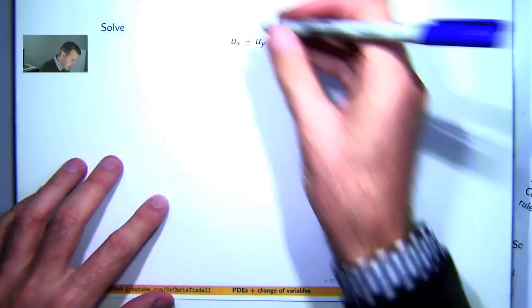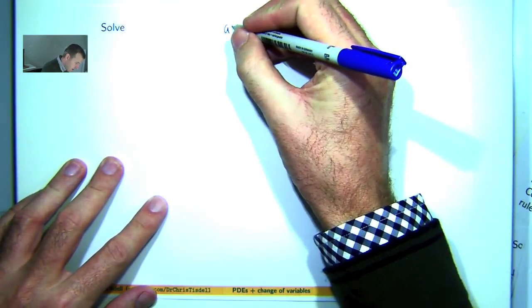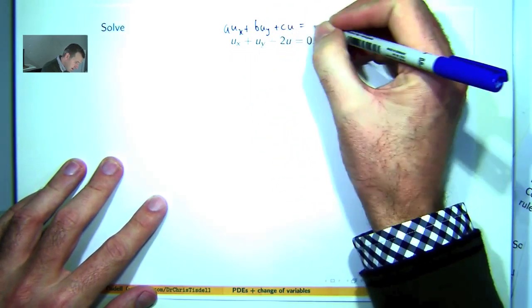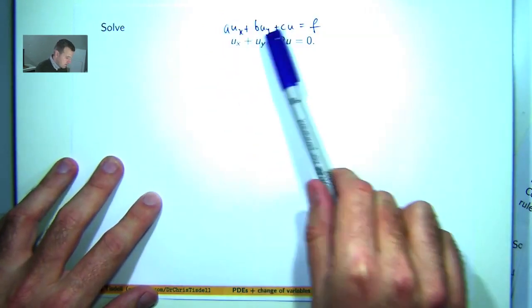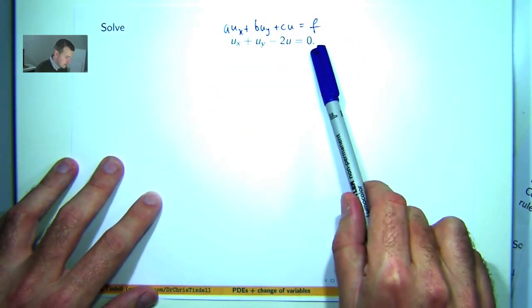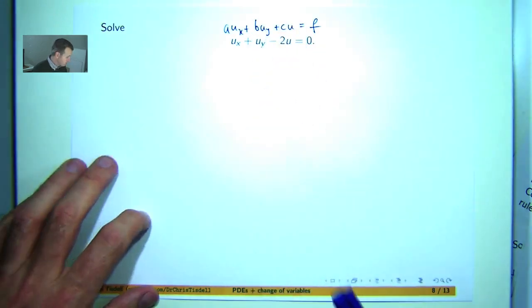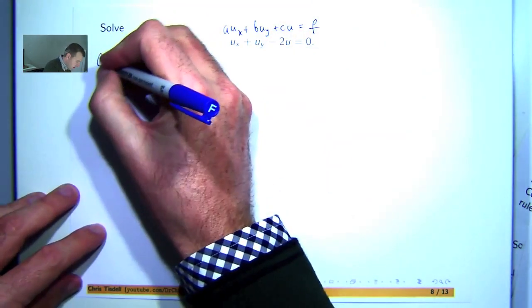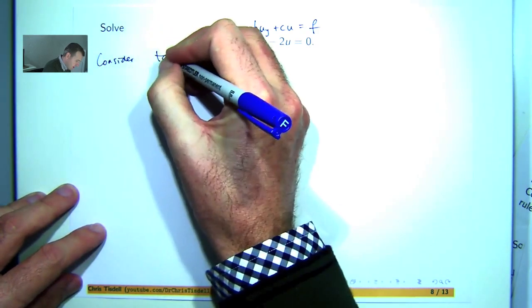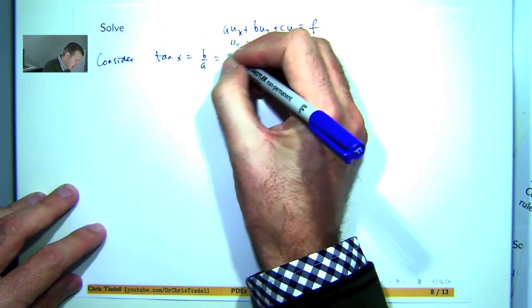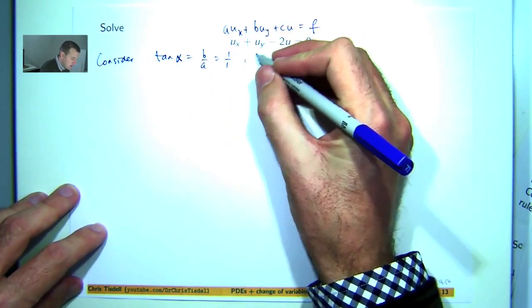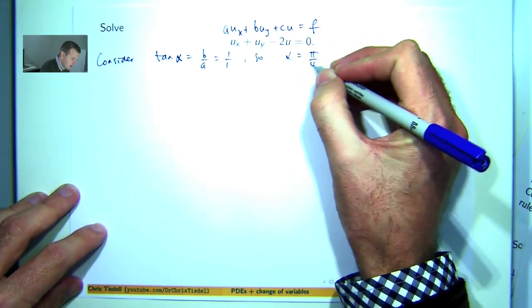So let's do an example. Here the coefficients are all constants, f is identically equal to 0, a would be 1, b would be 1, and c would be negative 2. First of all, let's determine our angle alpha. So B over A is just 1 over 1, so alpha will be pi over 4.